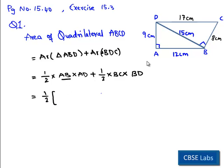Now we substitute the values by taking half as common. Here we have AB which is 12 centimeters, and AD 9 centimeters. Then we have BC which is 8 centimeters, multiplied by BD which is 15 centimeters. Now we simplify half of...